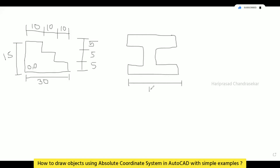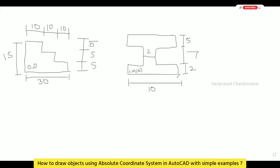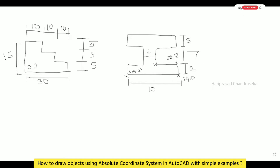Now we will consider another object with dimensions: 10 here, 10 here, 2 here, 5 here, and 7 for this dimension, and 2 here. The first point is 10,10. The next point is 10 plus 10 = 20, so 20,10. Adding 2 in the vertical direction gives 20,12. Then we calculate 10 minus 2 = 8, divided gives 4 on each side, so the next point is 20 minus 4 = 16, giving 16,12.